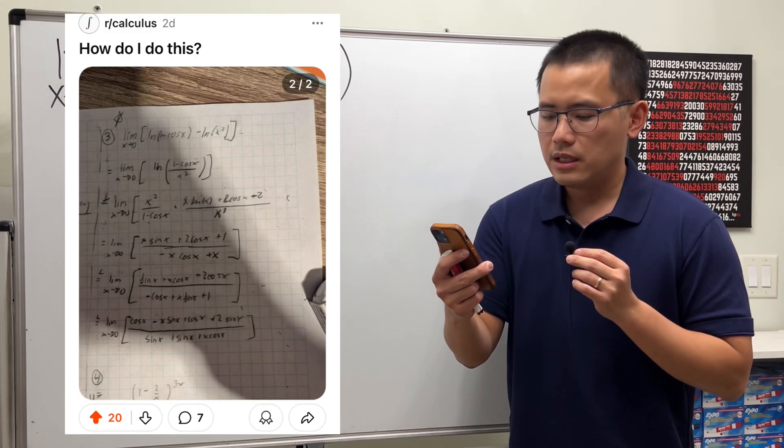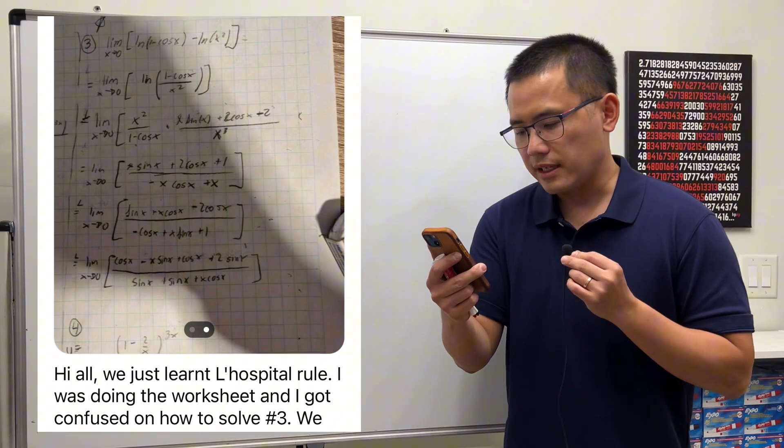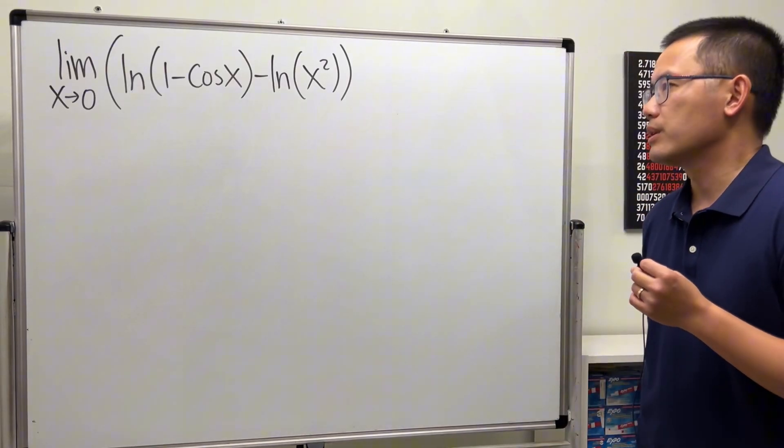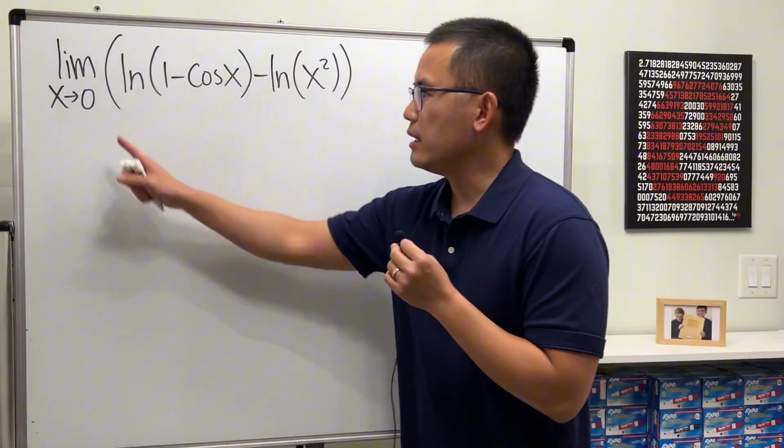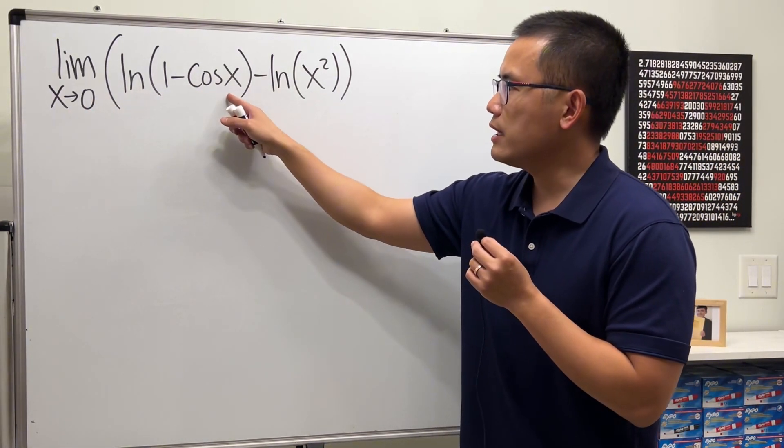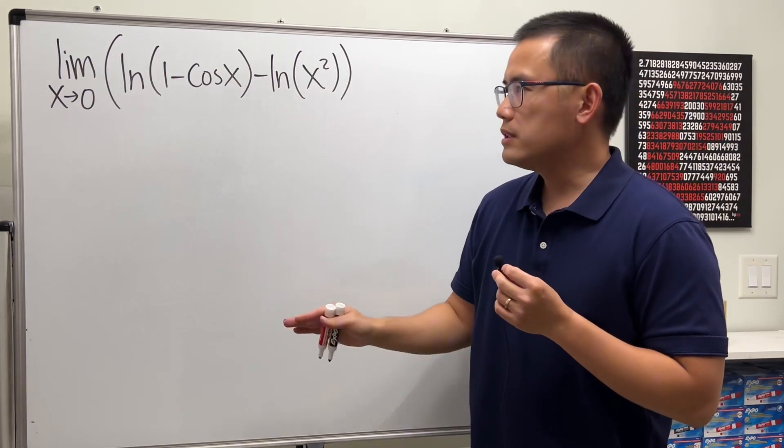Hi all, we just learned L'Hôpital's rule. I was doing the worksheet and I got confused on how to solve number three. Okay, let's take a look. We are going to evaluate the limit as x approaching zero of ln of one minus cosine x minus ln of x squared.